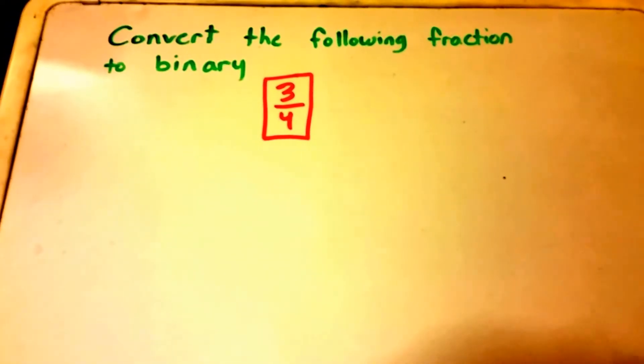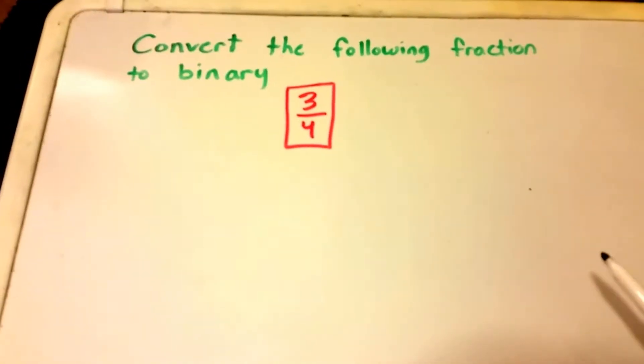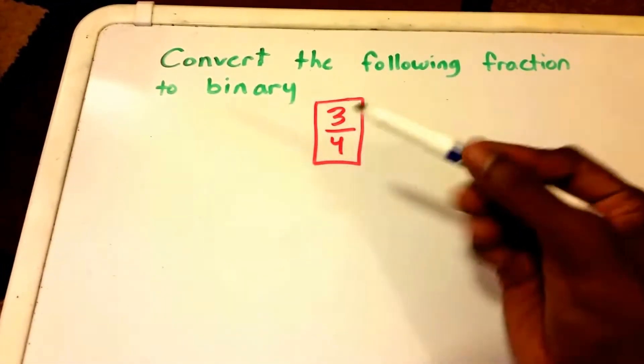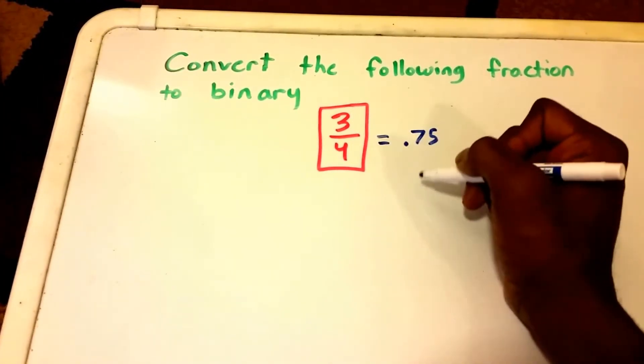Hey guys and welcome to this video. In this video we want to convert the following fraction to binary. So I have the fraction here in red. It's 3 fourths which can also be written as 0.75 in base 10.